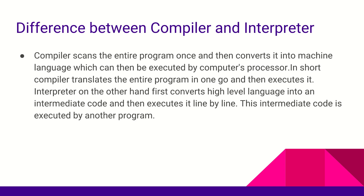The way a compiler works is it scans the entire program in one go, analyzes it for any issues, and if none are found, converts the entire code into machine language and executes it in one go. An interpreter, on the other hand, first iterates over the source code and converts it into an intermediate code, then goes line by line converting each line into machine-level code and executing it.